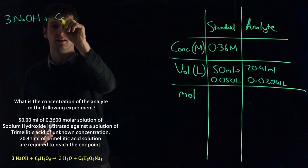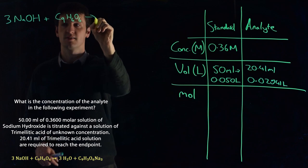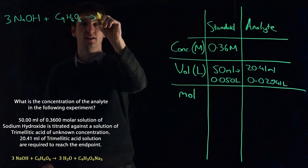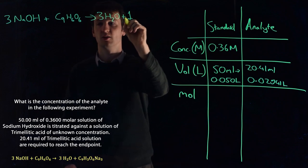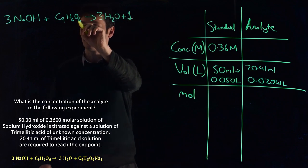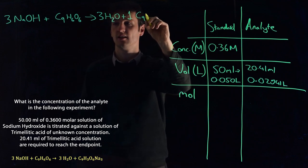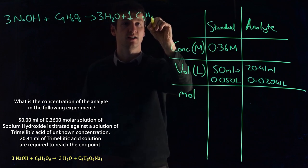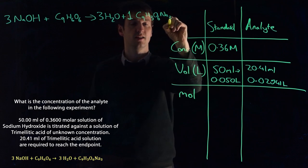Which is C9H6O6, to give us three molecules of water and one molecule of trisodium mellitate. So, C9H3O6Na3. So that's our equation.